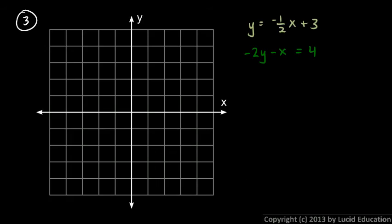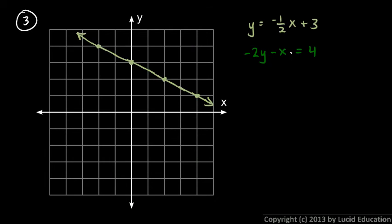And number three: y equals negative one-half x plus three. So let's graph that — a y-intercept of three right there, and then a slope of negative one-half, so we go down one over two. You can get some points on the line and draw in the graph. And then the next one: negative two y minus x equals four. Let's do the algebra and put this into slope-intercept form.